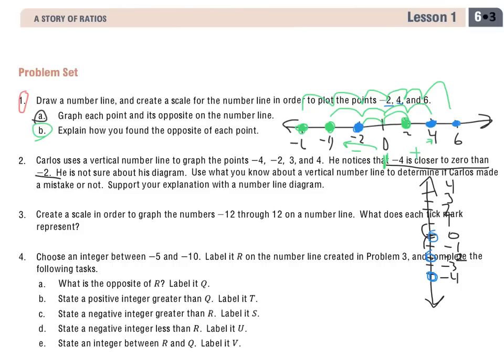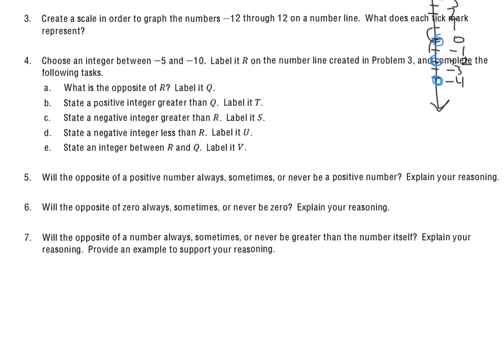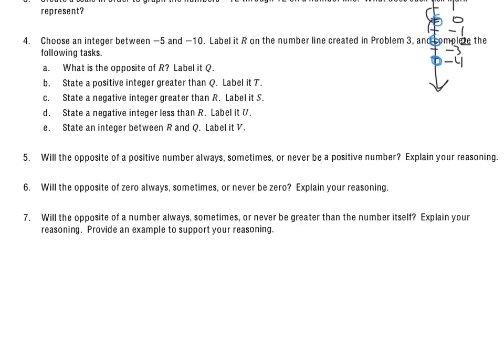So the last question that we're going to take a look at, we're going to slide down and take a look at 5, and I'm going to do this kind of out loud, and I'll show you a quick example to help out with this. Will the opposite of a positive number always, sometimes, or never be a positive number? So when we take a look at this one, let's try an example for it.